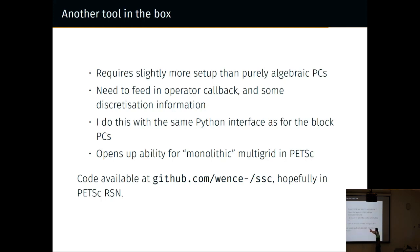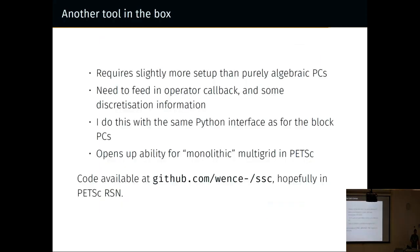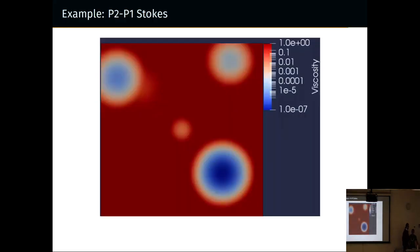I do this with the same Python interfaces for the block preconditioners, and it opens up the ability for monolithic multigrid in PETSc. The code is available. We have a branch in PETSc. Hopefully it will be ready to go soon. At this point I've updated my slides, and what I really wanted to show you was this exciting stuff. With Patrick we have a paper in preparation.